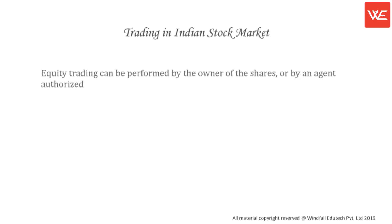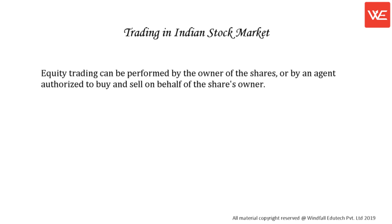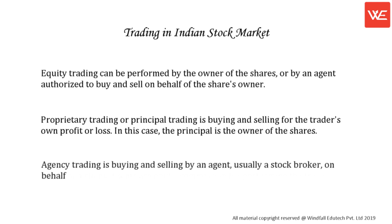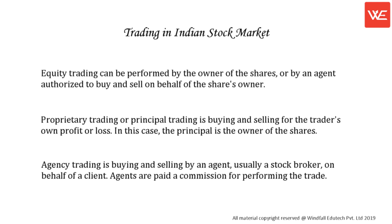Equity trading can be performed by the owner of the shares, or by an agent authorized to buy and sell on behalf of the share's owner. Proprietary trading or principal trading is buying and selling for the trader's own profit or loss — in this case, the principal is the owner of the shares. Agency trading is buying and selling by an agent, usually a stock broker, on behalf of a client. Agents are paid a commission for performing the trade.